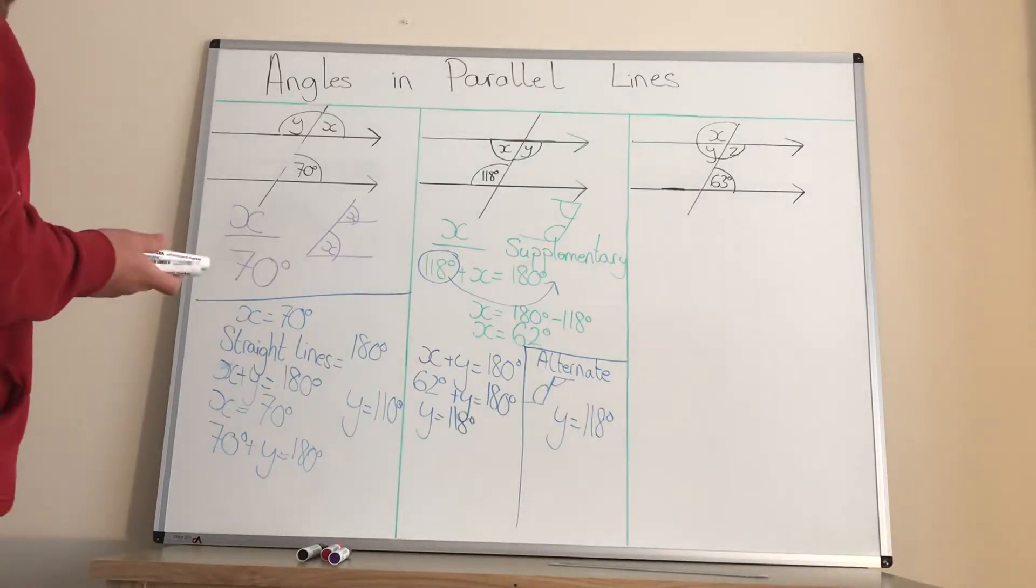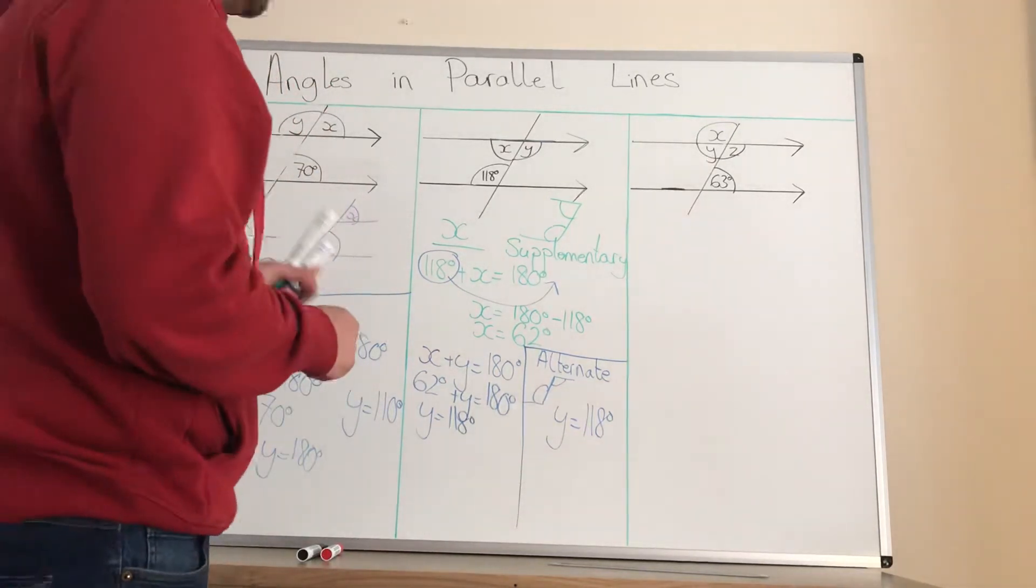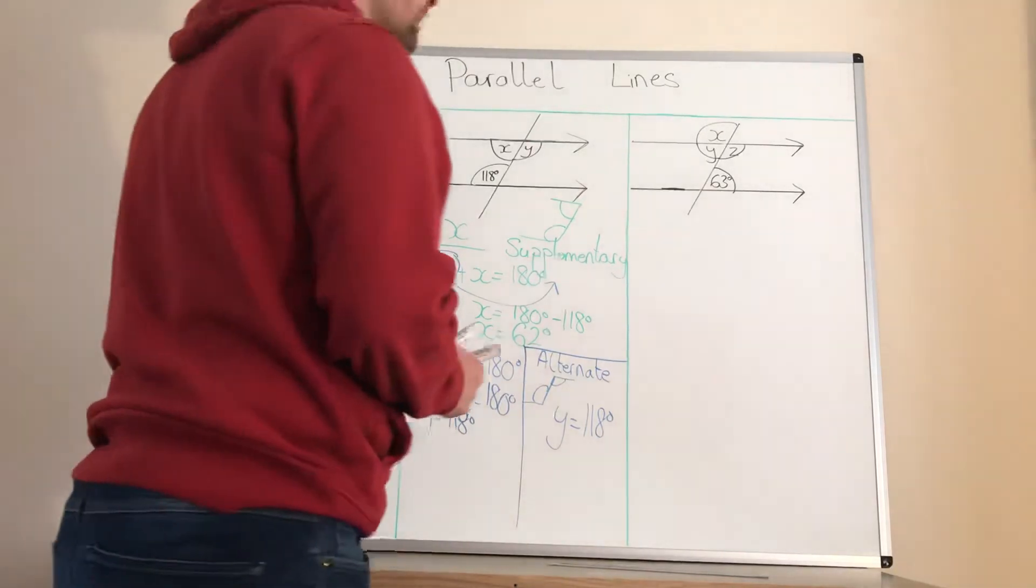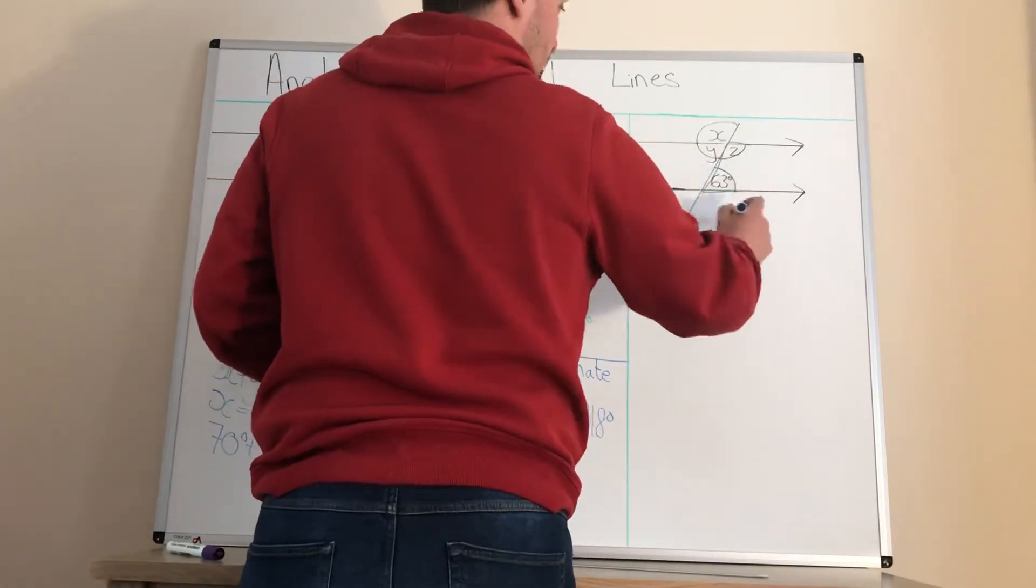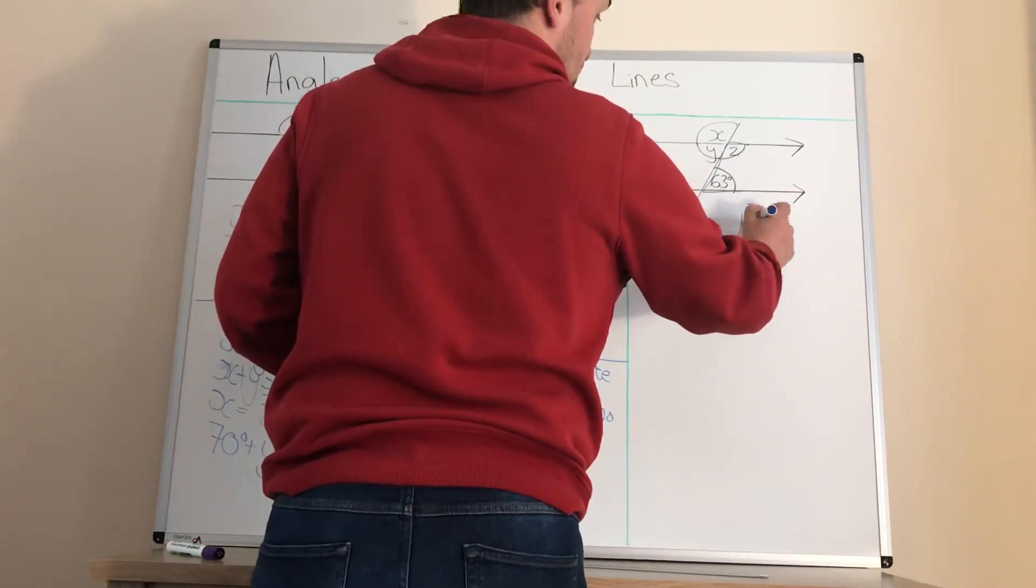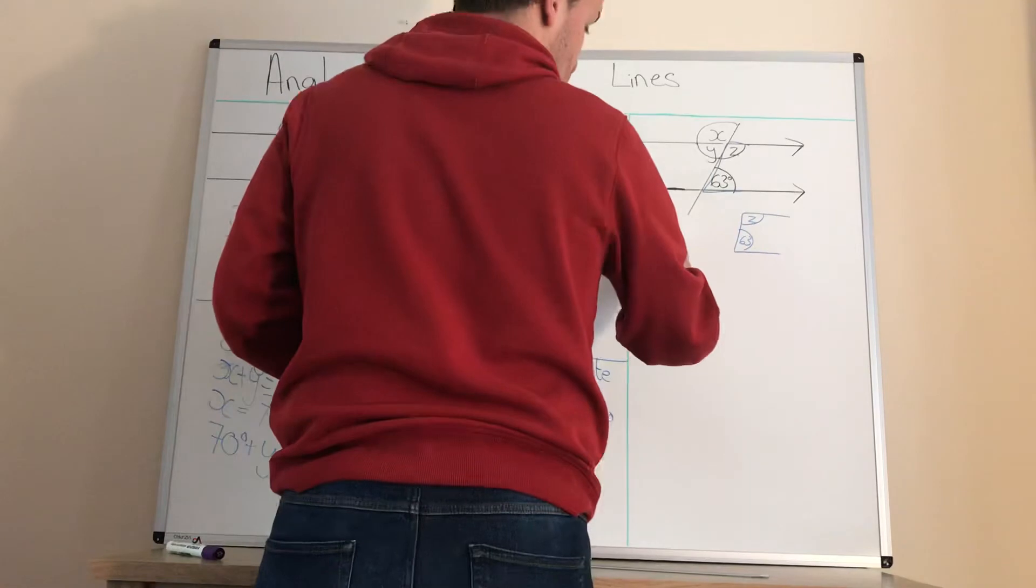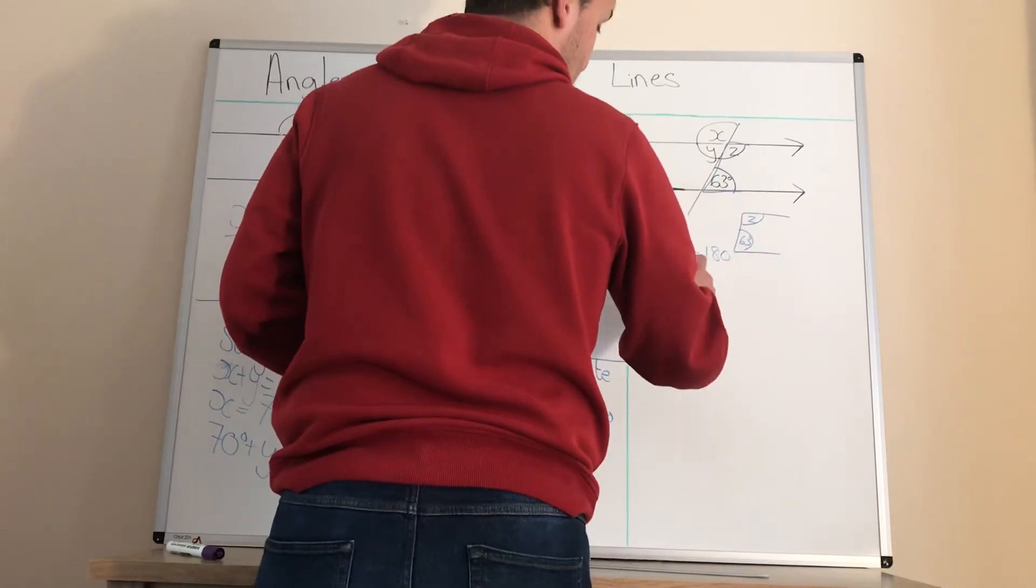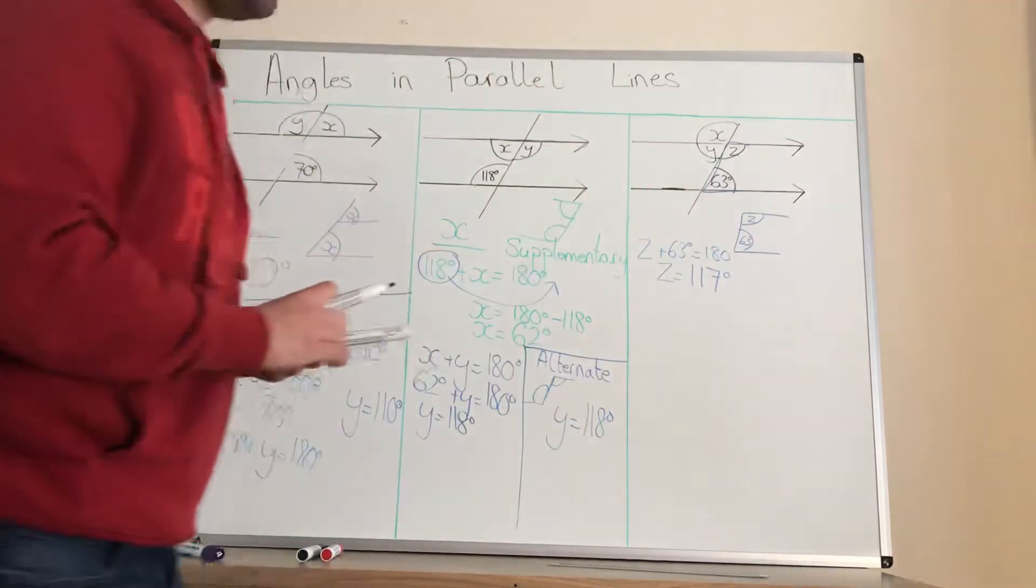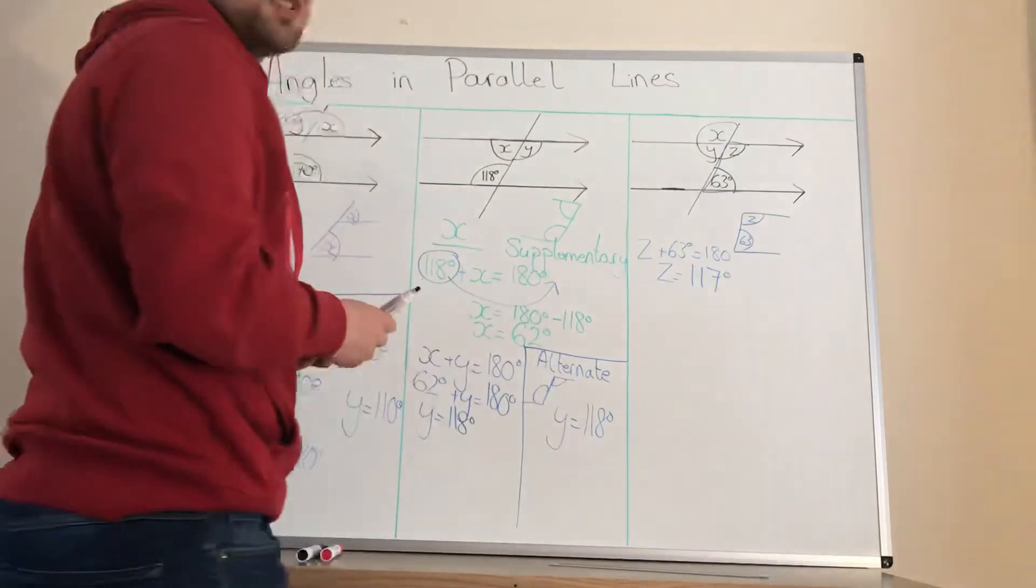On the last one we have to find three angles. There's more angles, but in some respects it's actually easier than these two. So you've got 63 degrees and we've got a C-shape here. What you've got is you've got Z and you've got 63. We already know supplementary angle. They add up to 180 degrees. So Z plus 63 degrees is 180 degrees. So Z equals 117 degrees. That's all that's doing is just using, forgetting about those two, we've got a C-shape there, which is supplementary at 117 degrees.